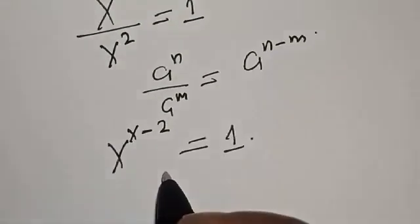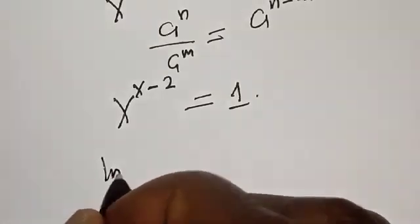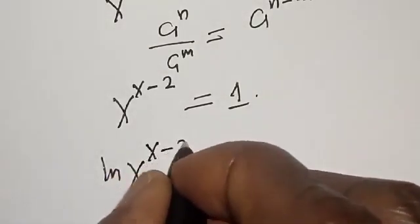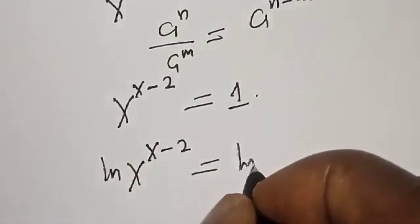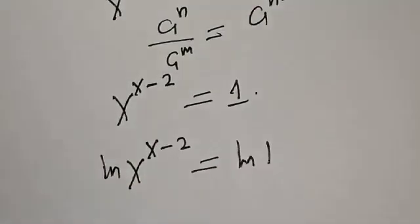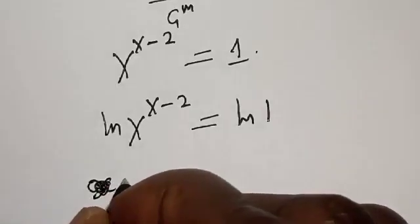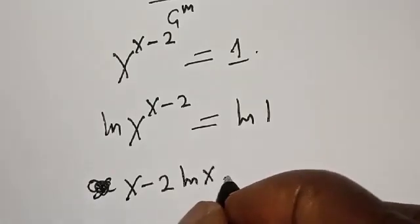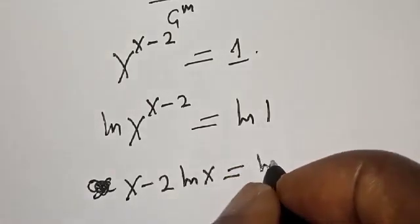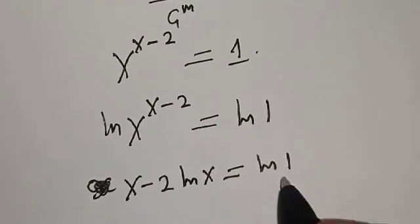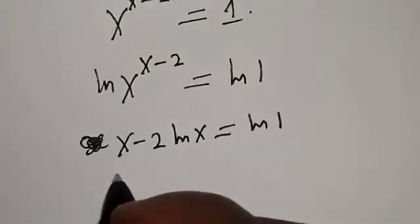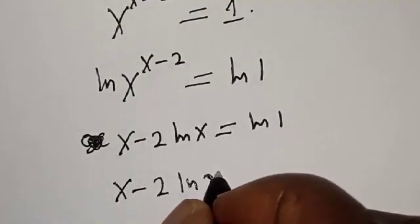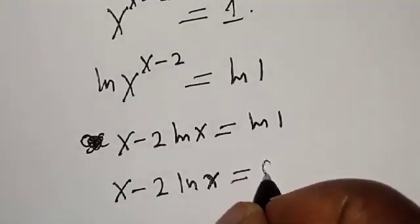Now let's take the log of both sides. We have natural log of s raised to power s minus two is equal to natural log of one. Then we have s minus two times natural log of s is equal to natural log of one. And natural log of one is zero, so we have s minus two times natural log of s is equal to zero.